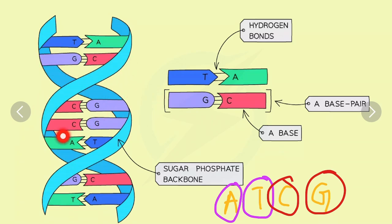The bonds between them are hydrogen bonds. This is the base, and this one is a base pair. A base pair is like GC or AT or TA.